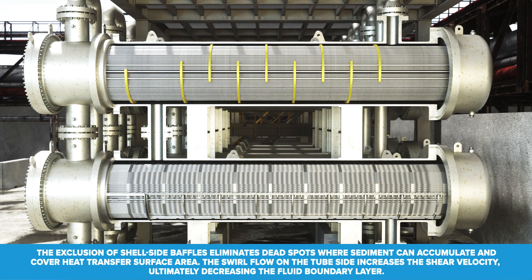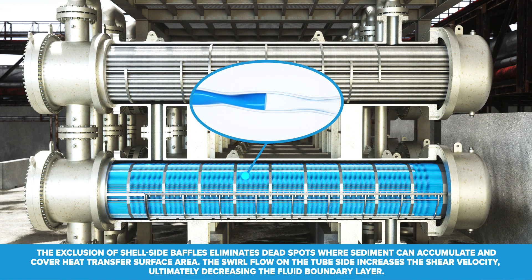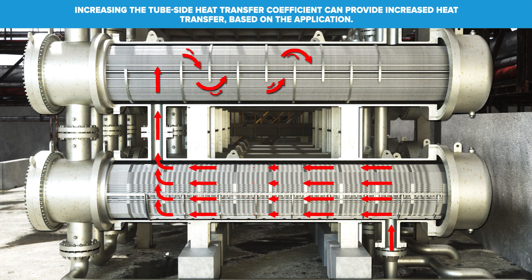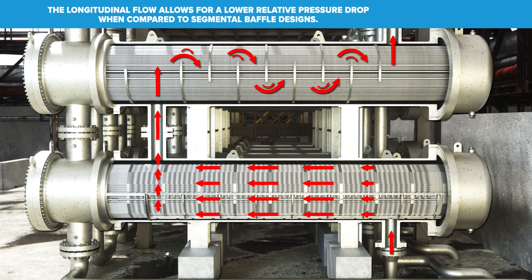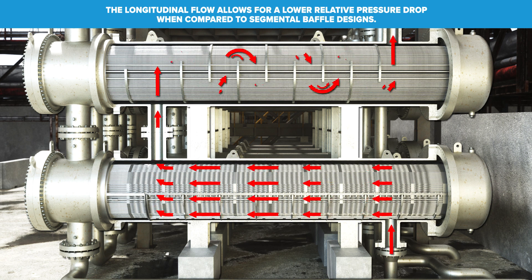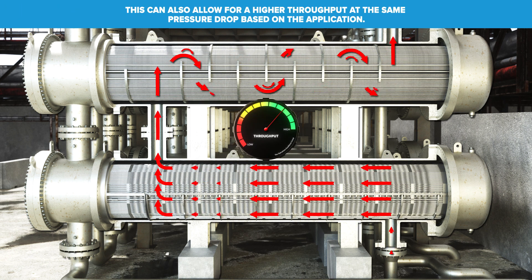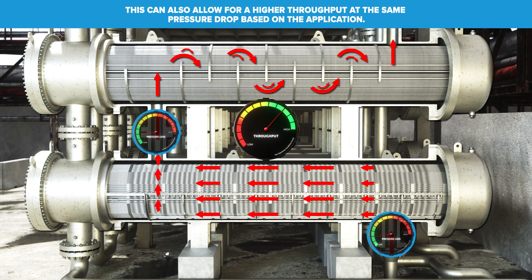The exclusion of shell-side baffles eliminates dead spots where sediment can accumulate and cover heat transfer surface area. The swirl flow on the tube side increases the shear velocity, ultimately decreasing the fluid boundary layer. Increasing the tube side heat transfer coefficient can provide increased heat transfer based on the application. The longitudinal flow allows for a lower relative pressure drop when compared to segmental baffle designs, and can also allow for higher throughput at the same pressure drop based on the application.